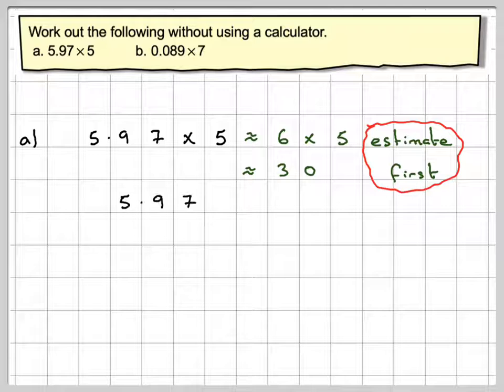So we've got 5.97 times 5. Don't worry about the decimal point to begin with. We're drawing our lines here. We're going to do 5 times 7, which is 35. So it's 5. Carry the 3.